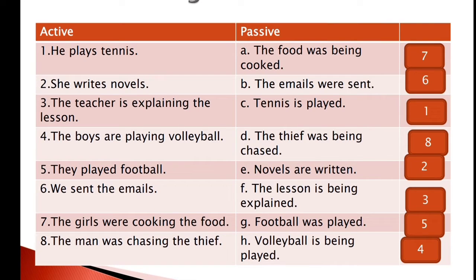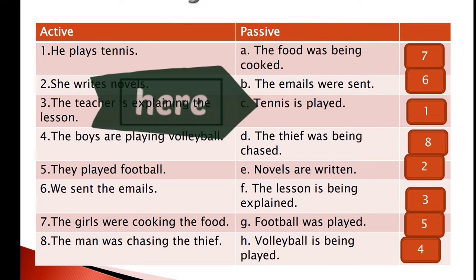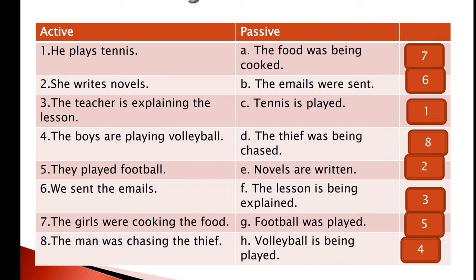Let's read together and see what happens. The first sentence in the first column says 'He plays tennis,' and it is matched with letter C: 'Tennis is played.' Can you spot the difference? In the first sentence we said 'He plays tennis' — the subject is at the beginning. But in letter C we said 'Tennis is played,' because here I am speaking about tennis, the object. Notice the verb: 'plays' becomes 'is played.'